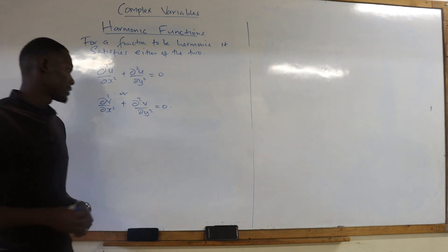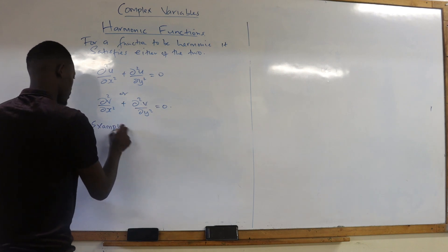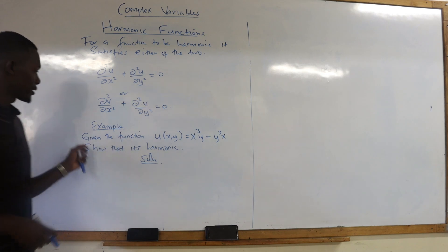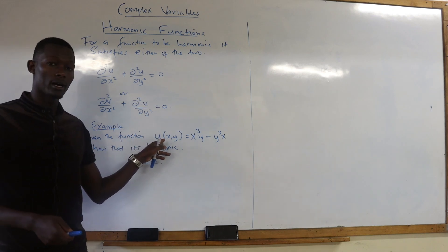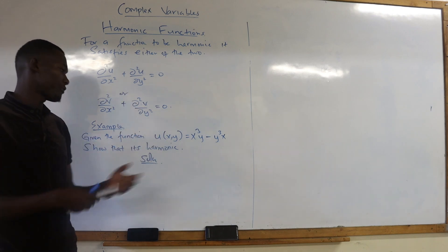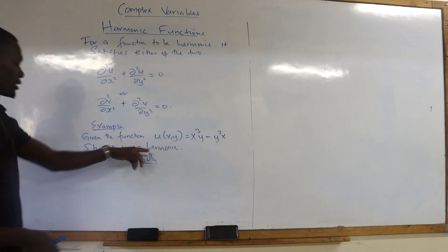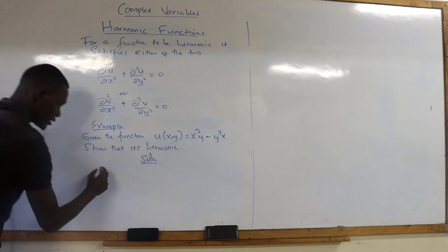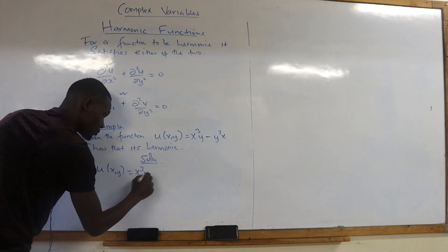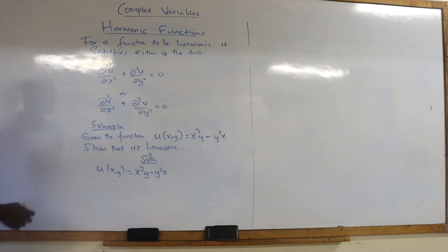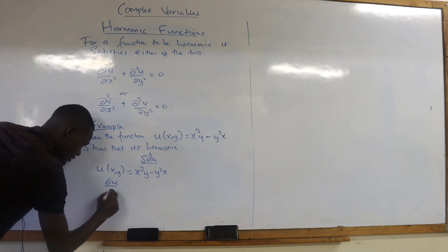Let's check an example or two to prove this. We have given the function u(x,y) — this is the real part of the function. We have u(x,y) equals x cubed y minus y cubed x. So you find the second derivative with respect to x and the second derivative with respect to y. First, differentiate once — you only differentiate the part with the variable x, which gives us 3x²y. We also have the term with x, so the x goes and you remain with negative y cubed.